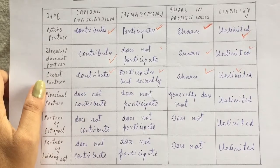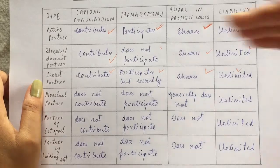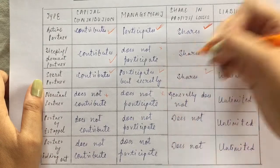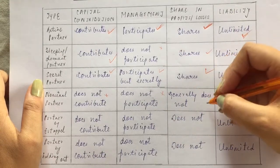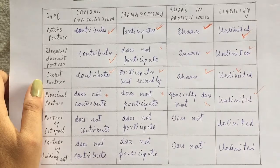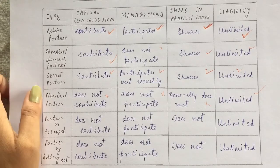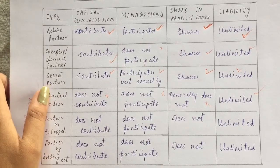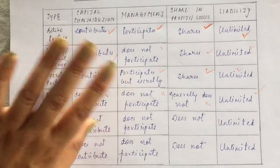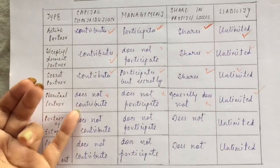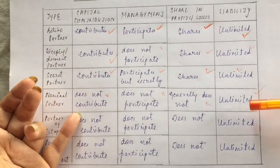Then there is the nominal partner. Nominal means just in name — just for the sake of saying. A nominal partner does not contribute to capital, does not participate in management, and does not share in profits and losses. However, liability is still unlimited. The nominal partner only lends their name or goodwill to the partnership — they do not spend money or help in management or decision making.